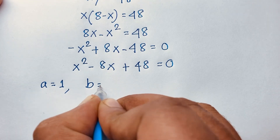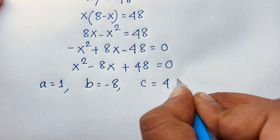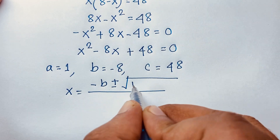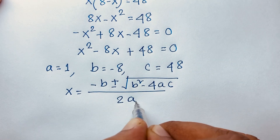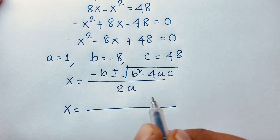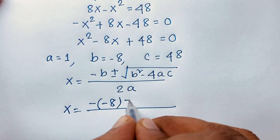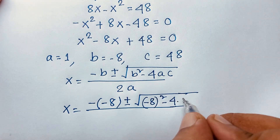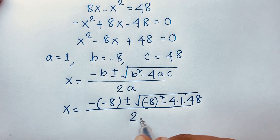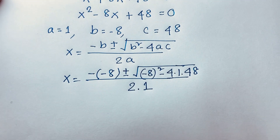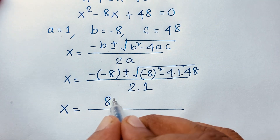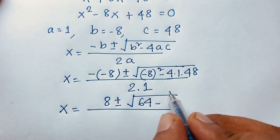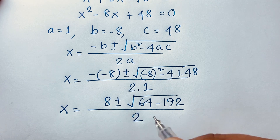For the quadratic x squared minus 8x plus 48 equals 0, we identify a = 1, b = −8, and c = 48. Using the quadratic formula x = (−b ± √(b² − 4ac)) / 2a, we substitute: x = (8 ± √((−8)² − 4·1·48)) / (2·1), which gives x = (8 ± √(64 − 192)) / 2.